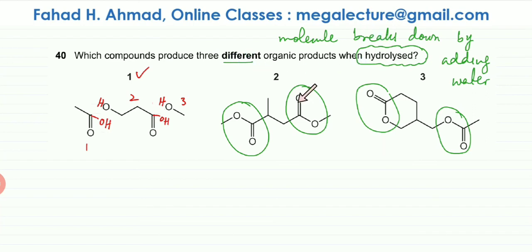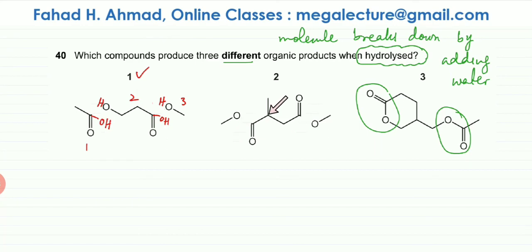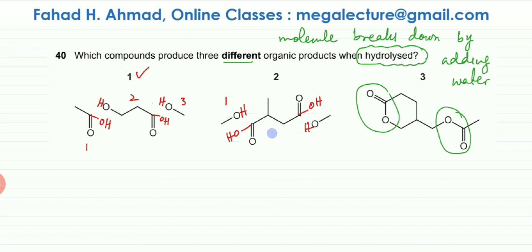Now looking at molecule two, the ester link — the C=O bond — is going to break. Breaking those bonds, the single O side changes into an alcohol and the double bond O side changes into a carboxylic acid. This also changes into an alcohol. Again, you can see three different molecules are produced: one, a second molecule, and a third molecule. So option two is also correct.